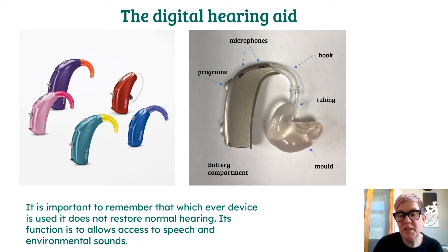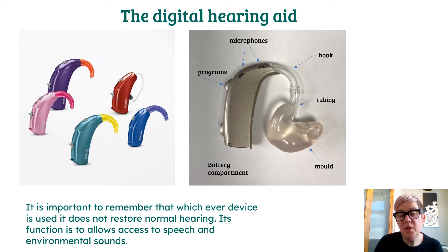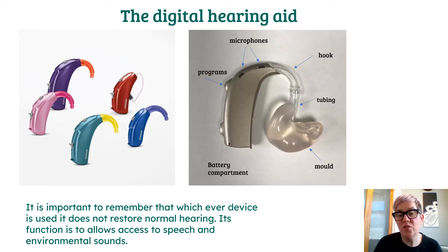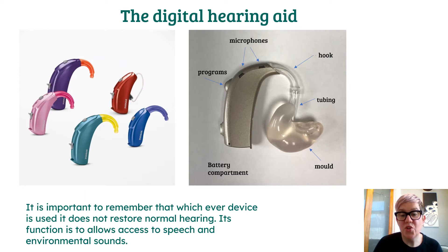The microphones need to be positioned just at the top part of the ear so they're sitting in the best place to pick up sound. There's a plastic hook which helps to anchor it to your ear, and tubing that comes down into your mould. The mould requires an impression of your ear and needs to be a really good fit, otherwise you'll hear lots of whistling. When children grow and their ears get larger and you're hearing constant whistling, that means they require new moulds. Intermittent whistling may mean the mould is not pushed in properly.